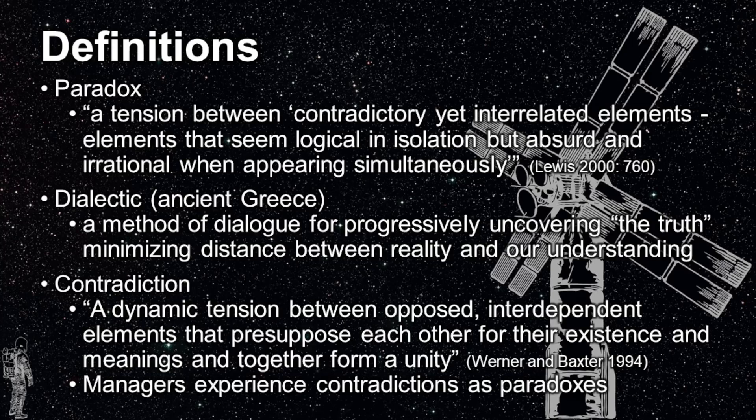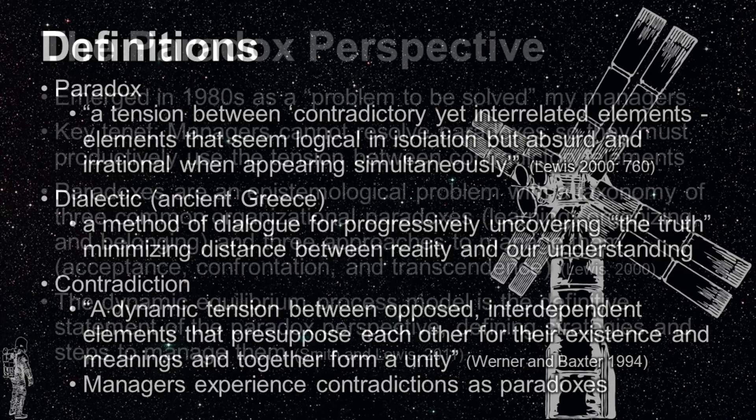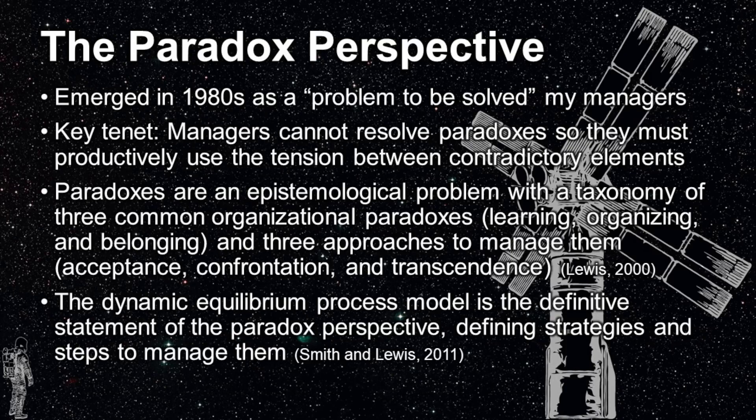A contradiction is defined as a dynamic tension between opposed, interdependent elements that presuppose each other for their existence and meanings, and together form a unity. In the paradox perspective literature, managers experience contradictions as paradoxes. The paradox perspective emerged in the 1980s as a problem to be solved by managers. A key tenant is that managers cannot fully resolve paradoxes, so they must accept them and productively use the tension between contradictory elements to resolve the resulting issues.